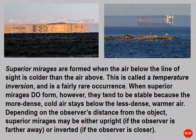Superior mirages are formed when the air below the line of sight is colder than the air above. This is called a temperature inversion and is a fairly rare occurrence. When superior mirages do form, however, they tend to be stable, because the more dense cold air stays below the less dense warmer air. Depending on the observer's distance from the object, superior mirages may be either upright, if the observer is farther away, or inverted, if the observer is closer.